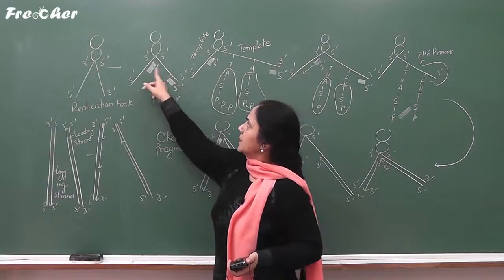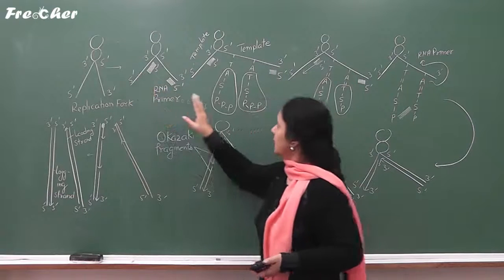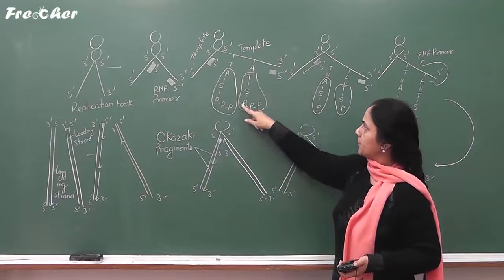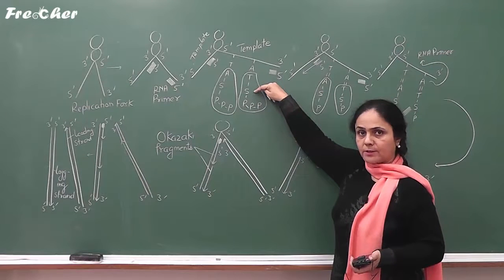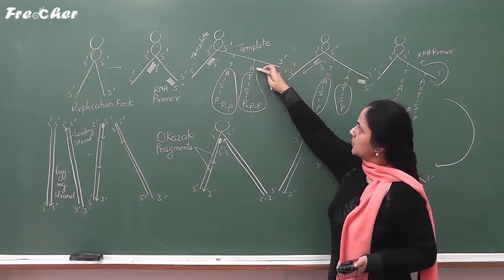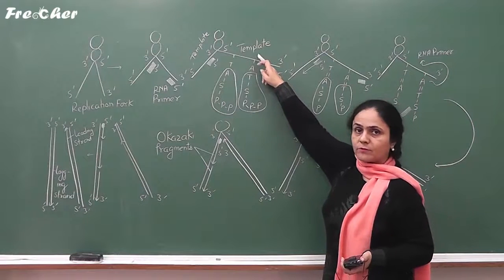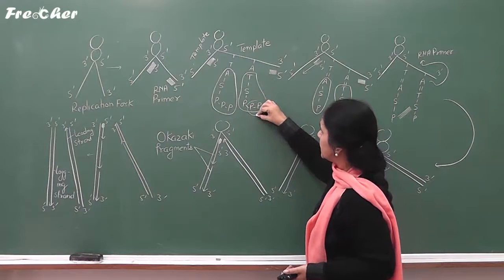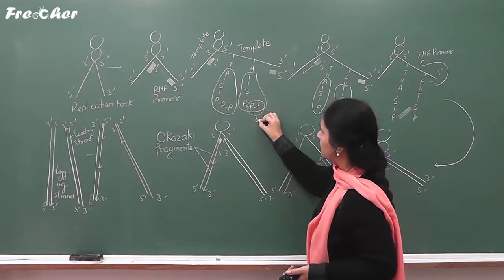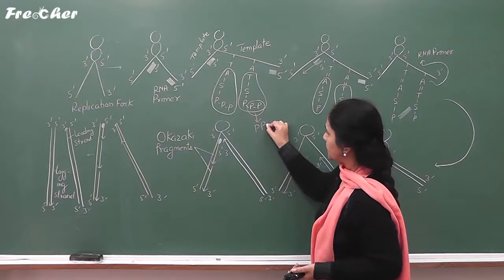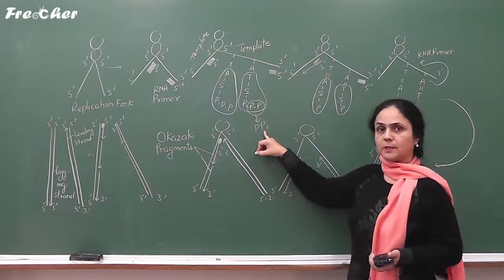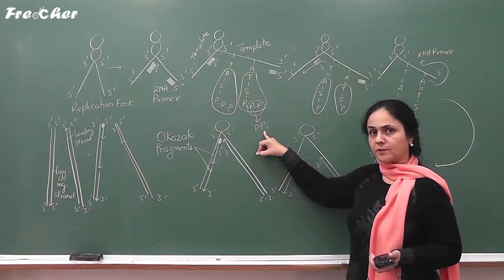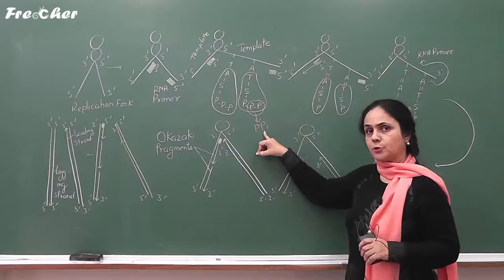In DNA replication, both strands function as template. After formation of RNA primer, activated nucleotides — that is, deoxyribonucleoside triphosphate — come opposite to complementary nucleotides of the template strand. Two terminal phosphate radicals separate from the activated nucleotide as pyrophosphate, and this pyrophosphate undergoes hydrolysis to produce two molecules of inorganic phosphate, releasing energy.